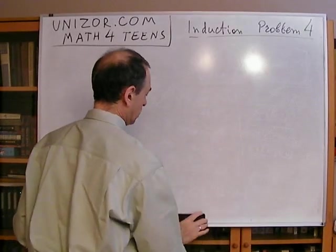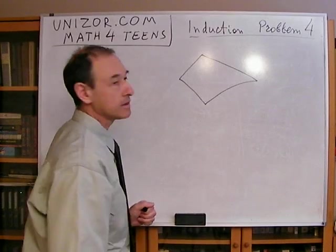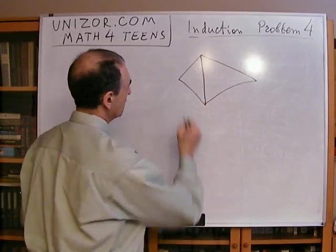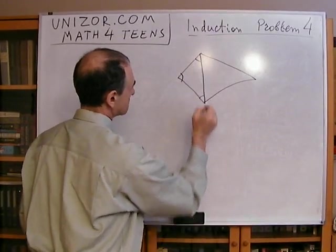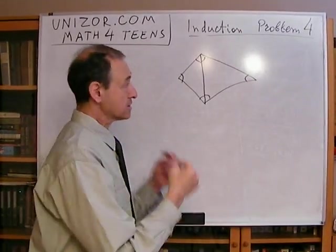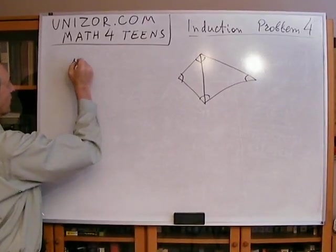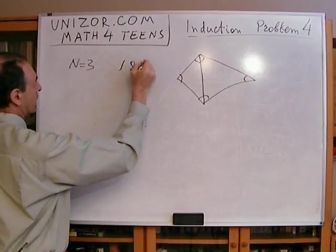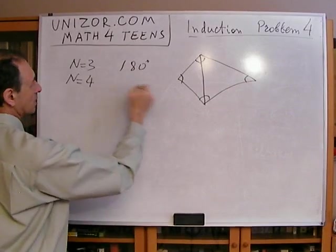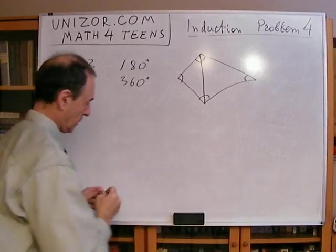Let's say you have a four-sided polygon. Well, obviously, I can divide it in two triangles. Sum of these angles is 180 and sum of these angles is 180. So it looks like we double 180. So for triangles, we have 180. For a polygon with four sides, it looks like it's 360.